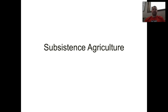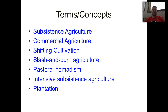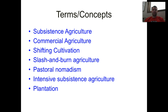Today's video is going to focus on subsistence agriculture. Even though we're going to make some reference to commercial agriculture, the real focus is going to be on subsistence agriculture. Terms and concepts you should be very familiar with and able to define after watching this video are: subsistence agriculture, commercial agriculture, shifting cultivation, slash and burn agriculture, pastoral nomadism, intensive subsistence agriculture, and plantation agriculture.